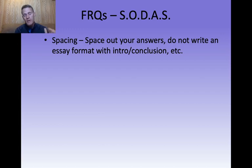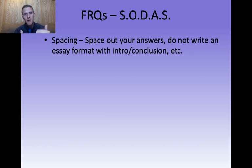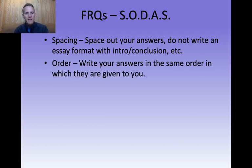There is no partial credit — you either get it or you don't. So spacing is super important. For the first bullet point, write on that bullet point, apply it, then skip a couple lines or spaces if you're doing it online, and then go on to the next bullet point and start completely over from the very beginning. That's the S: spacing.